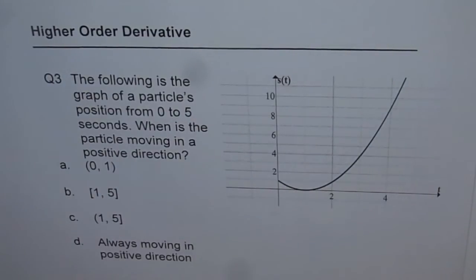Here is multiple choice question number 3. The following is the graph of a particle's position from 0 to 5 seconds. When is the particle moving in the positive direction?